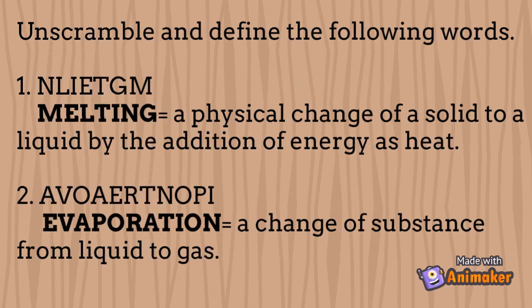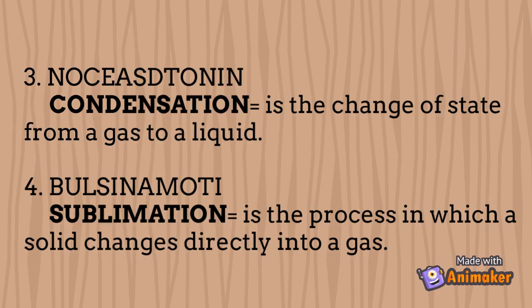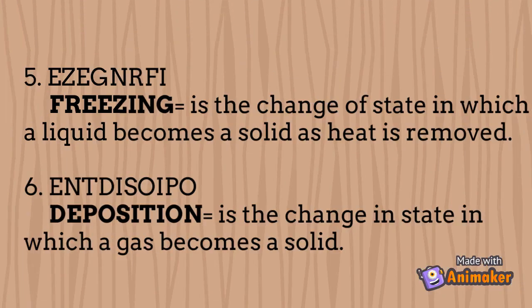Unscramble and define the following words. Number 1: Melting — a physical change of a solid to liquid by the addition of energy as heat. Number 2: Evaporation — a change of substance from liquid to gas. Number 3: Condensation — the change of state from a gas to a liquid. Number 4: Sublimation — the process in which a solid changes directly into a gas. Number 5: Freezing — the change of state in which a liquid becomes a solid as heat is removed. Number 6: Deposition — the change in state in which a gas becomes a solid.